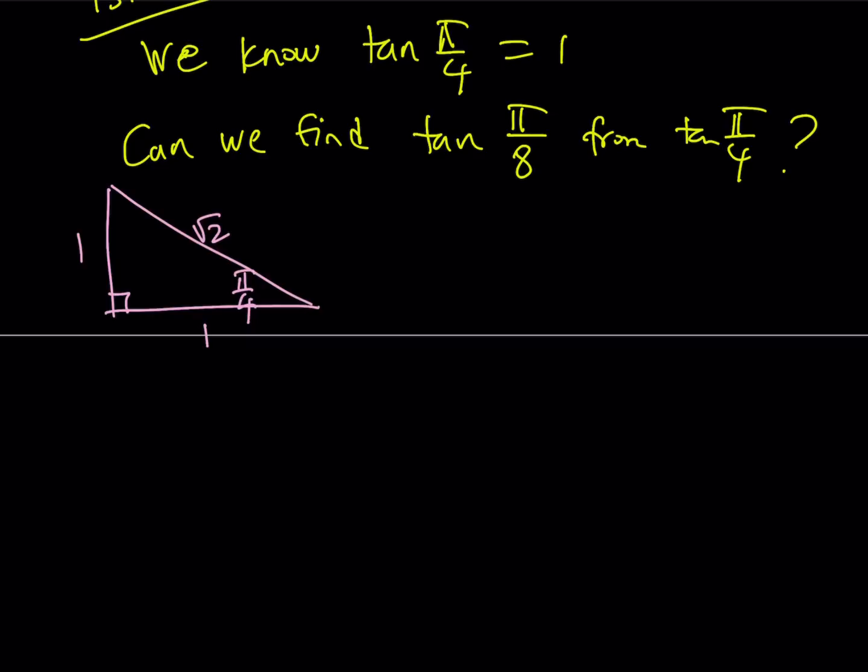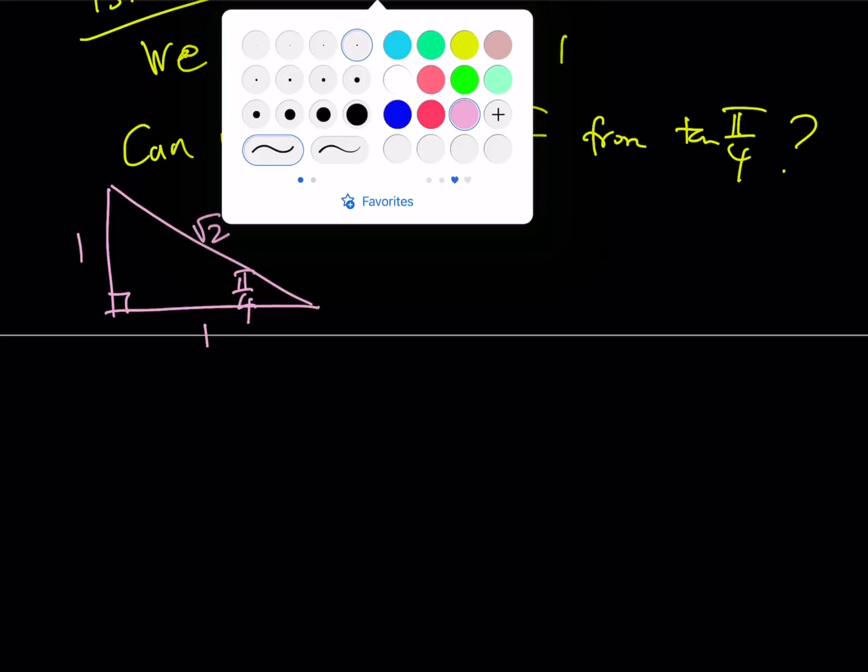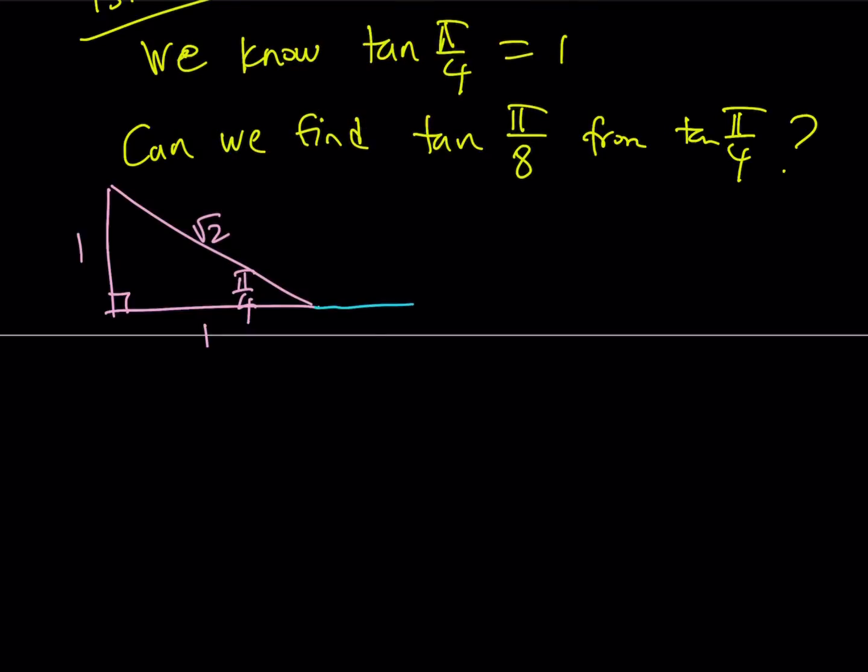What am I doing with this? Well, I want to get pi over 8. I'll be extending the base as much as the hypotenuse of the other triangle, which is root 2. Why am I doing that? You will see in a little bit. Now, one of the most important theorems in geometry, in my opinion, is, by the way, this is also pi over 4, is the exterior angle theorem.